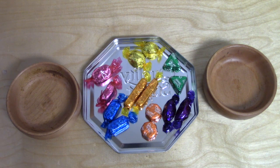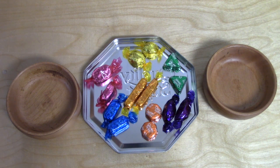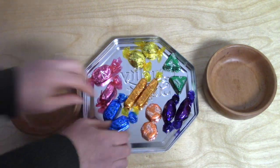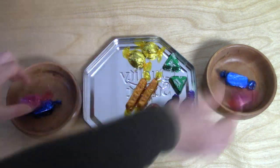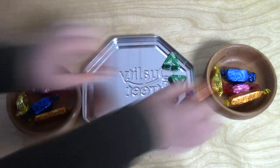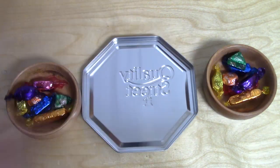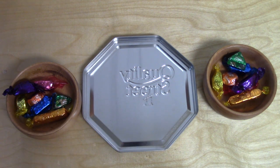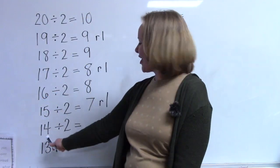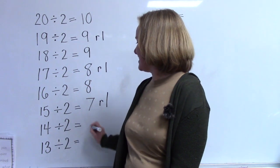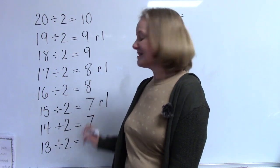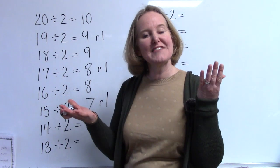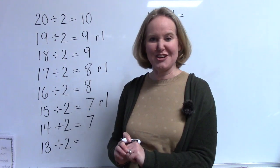Now we have fourteen candies. If we divide fourteen by two, do you know how many will be in each bowl? Let's see. One, two, three, four, five, six, and seven. Fourteen divided by two is seven with no remainders. Fourteen candies divided into two bowls was pretty easy — there was seven in each bowl with nothing remaining.